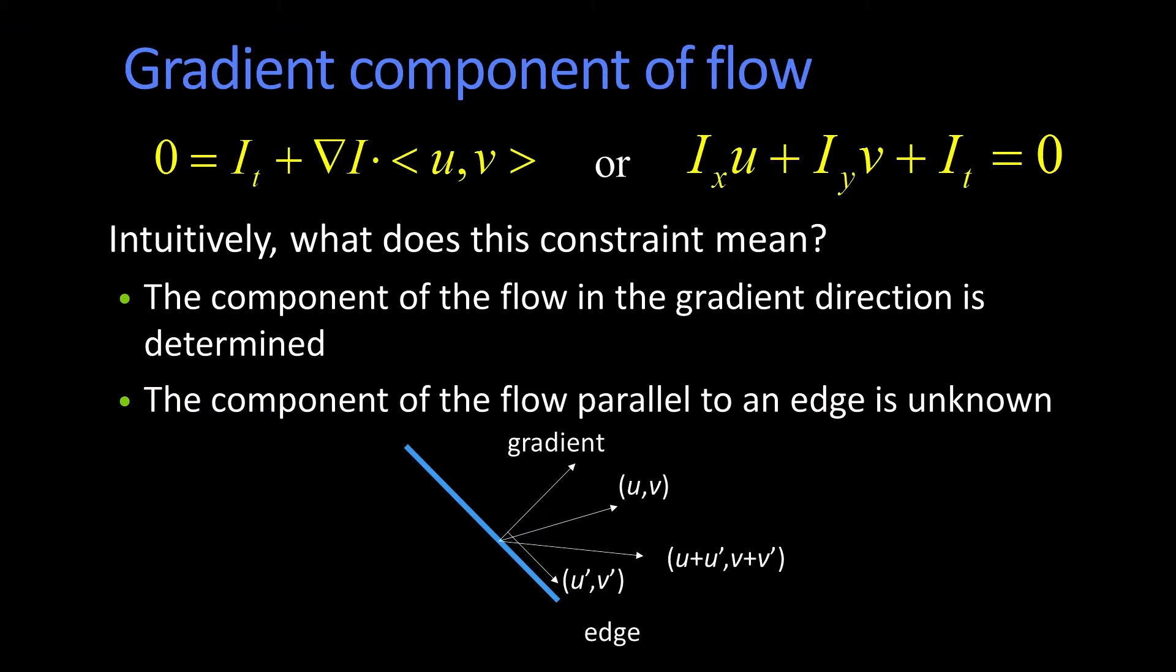So intuitively, we can think about what this constraint means as follows. The component of u, v that's in the direction of the gradient, that's what we can measure, right? That amount will tell us how much the image will change. That's why that's the amount of I_t, I sub t, the derivative.